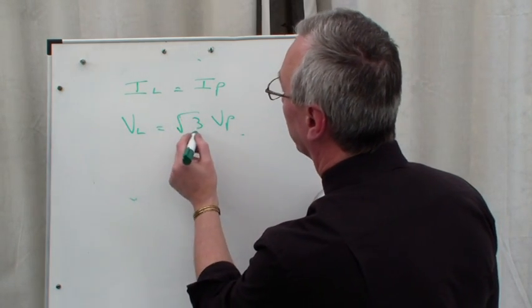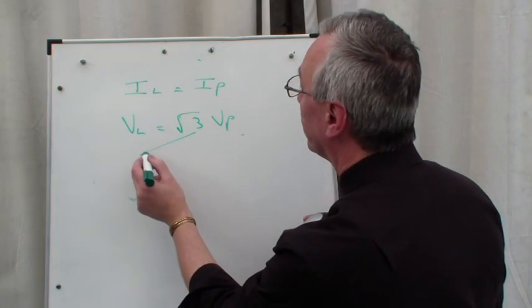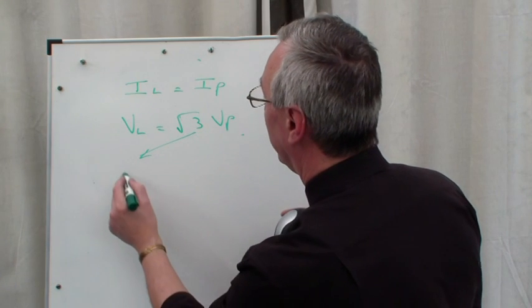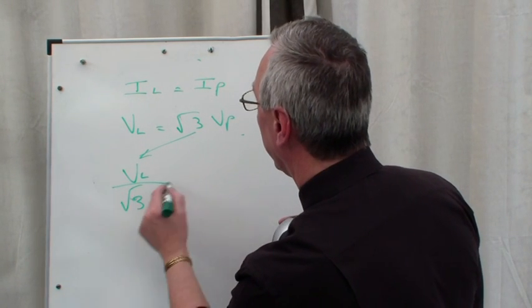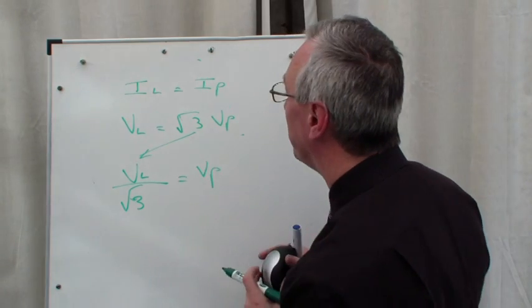Or it was just like sending it down on the little cross arrow, so that VL / √3 = VP.